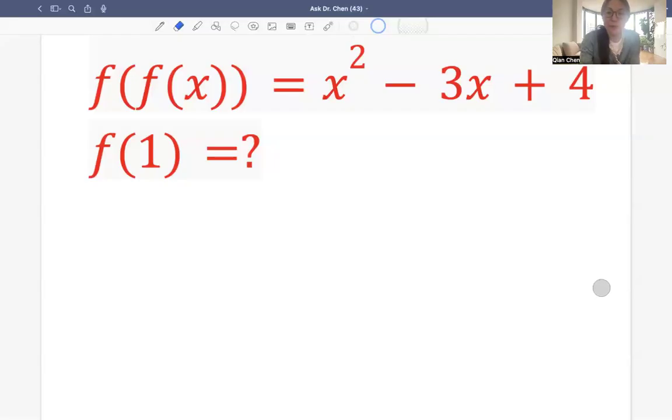Let's see this question. This question was given a compositional function. The compositional function is given as f composed with itself. We get x squared minus 3x plus 4. Now we want to find out f of 1.